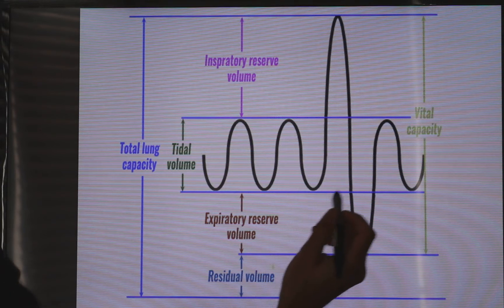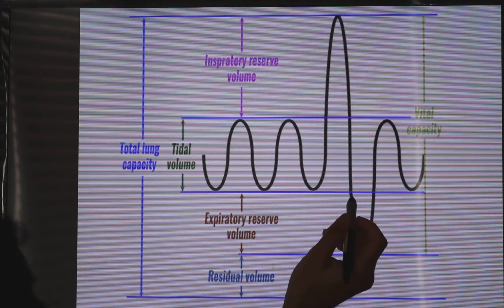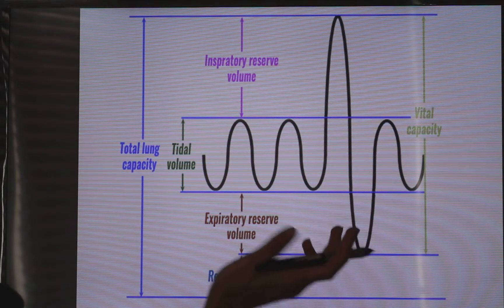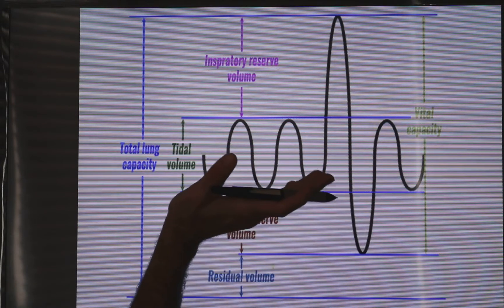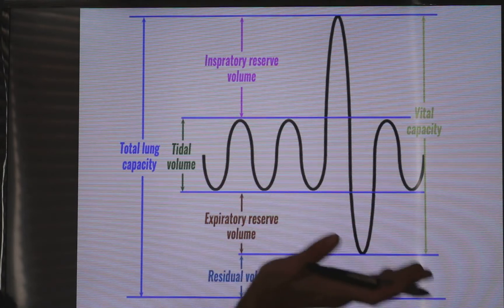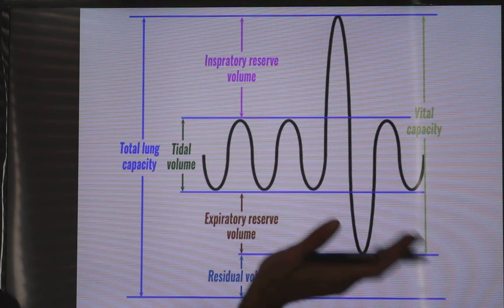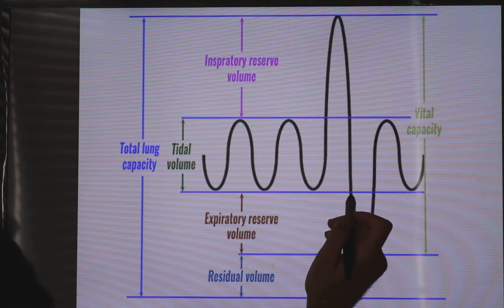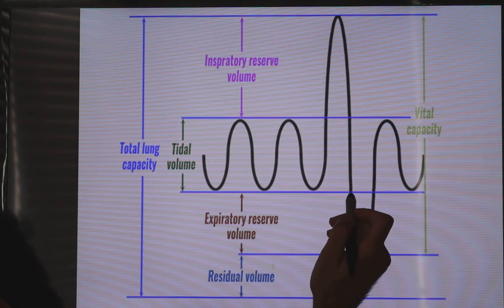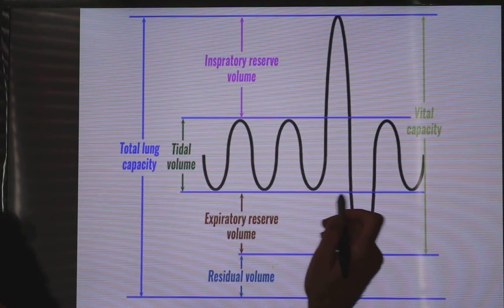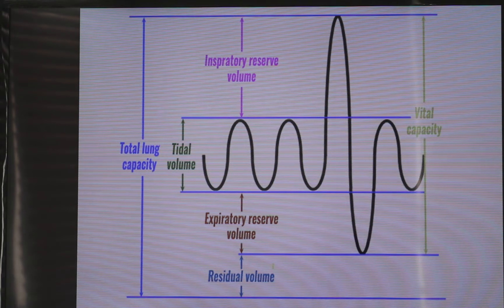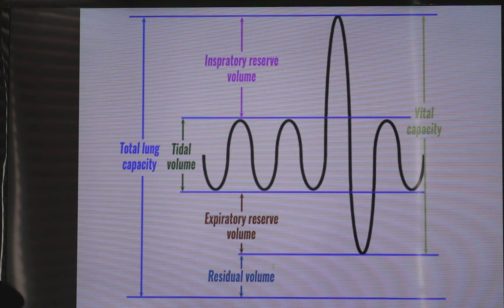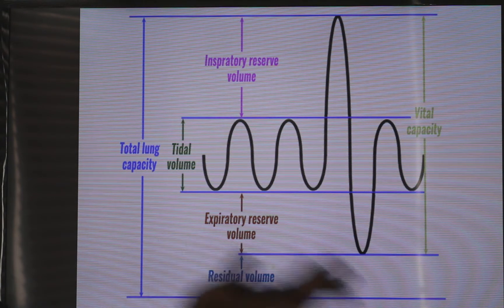At the age of 44, when the patient is in the supine position, the closing capacity will be approximately equal to the functional residual capacity. This means alveoli will start closing during normal breathing in supine patients around this age.